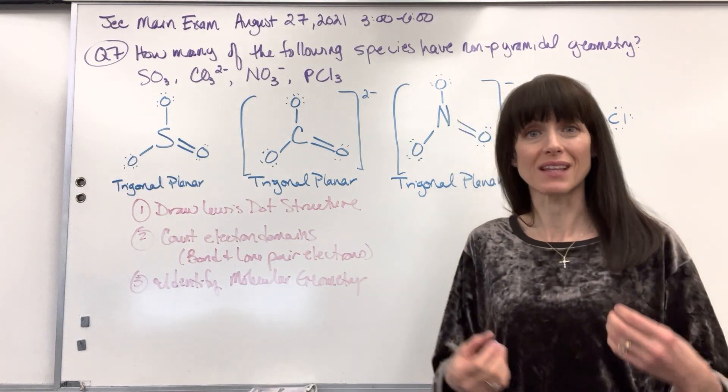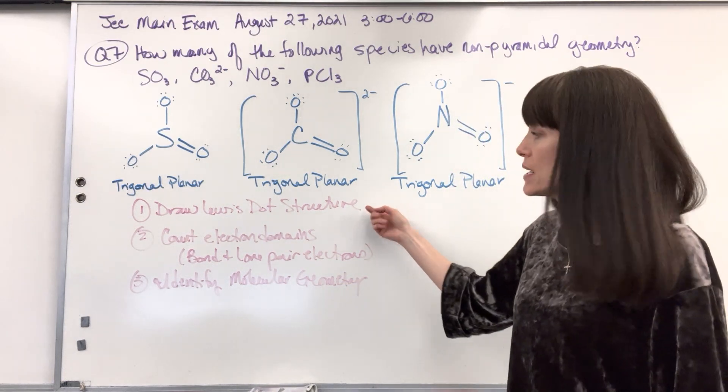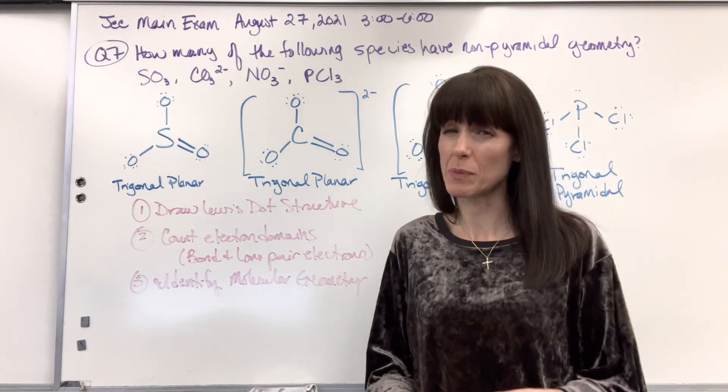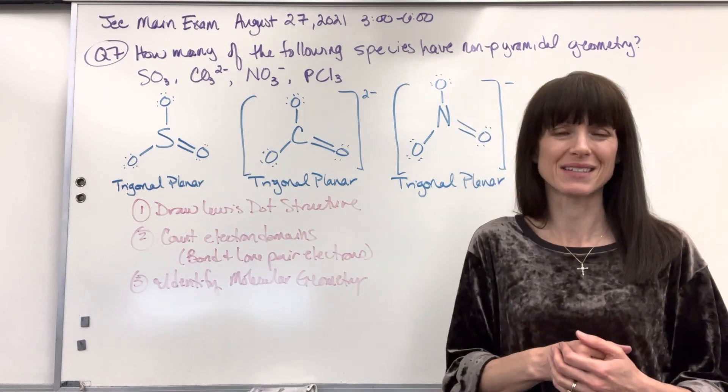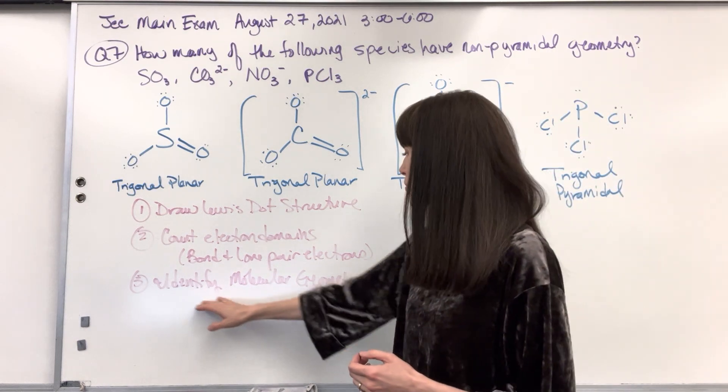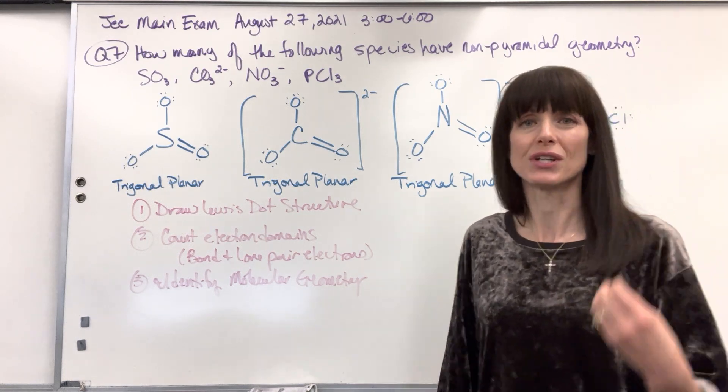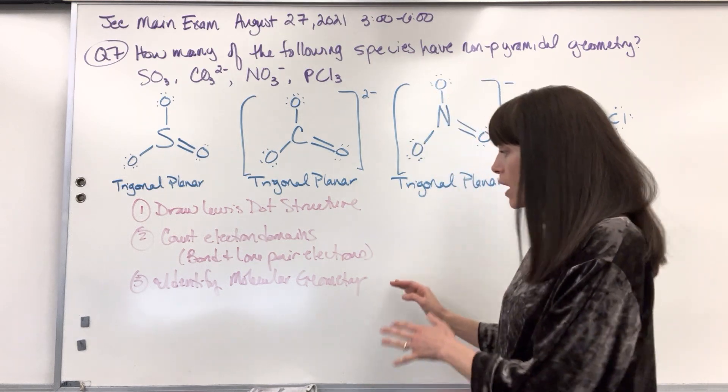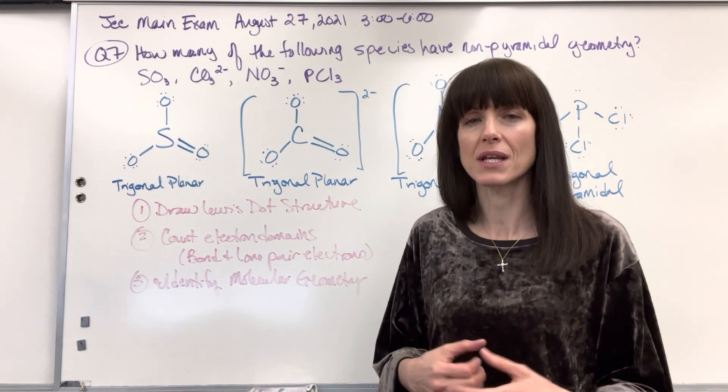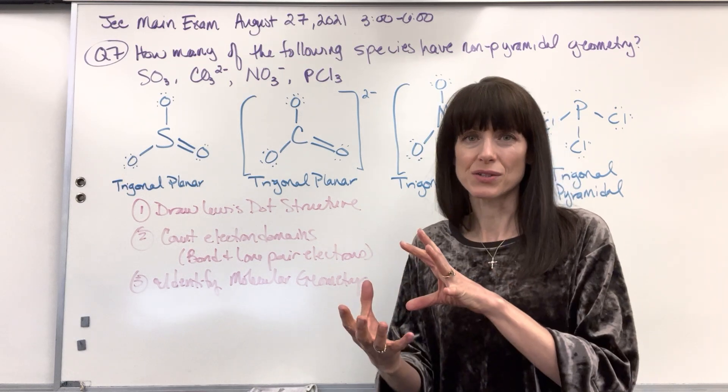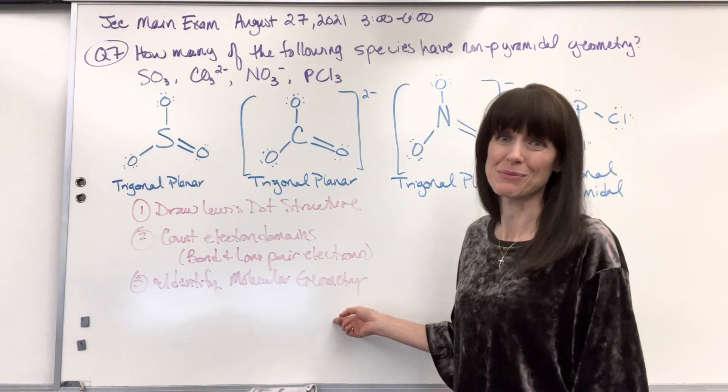So here's your recipe list. Here are the steps to figure this out. First, you want to draw the Lewis dot structure. Second, you're going to count electron domains and pay special attention always to the bonded electron domains and the lone pair electron domains. Once you've done that, then you're going to identify the molecular geometry. Honest truth, molecular geometry, you just have to memorize it. Now, the geometries are logical, so you can make it make sense. It's not necessarily just rote memorization. You can look at the shape and say, oh yeah, this shape, it does correlate to the name that has been given, but you have to memorize those.